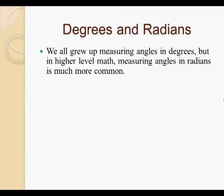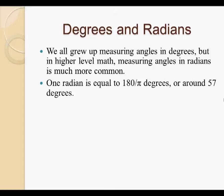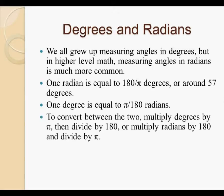Degrees and radians. We all grew up measuring angles in degrees, but in higher level math, measuring angles in radians is much more common. One radian is equal to 180 divided by pi degrees, or around 57 degrees. One degree is equal to pi divided by 180 radians. To convert between the two, multiply degrees by pi then divide by 180, or multiply radians by 180 and divide by pi.